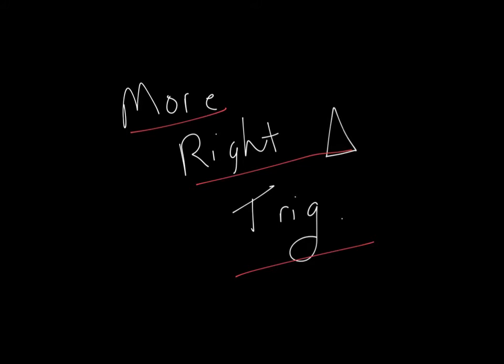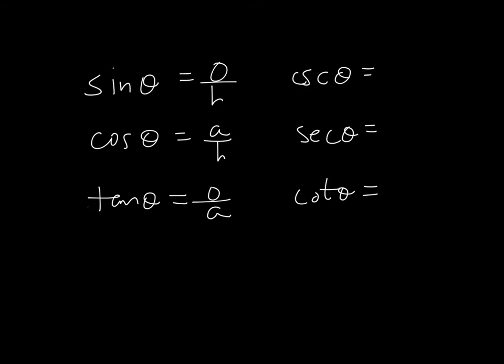We're going to learn some new material. We talked about sine, cosine, and tangent, and now we're going to look at a little review of the three we talked about yesterday. Here's sine: opposite over hypotenuse, cosine: adjacent over hypotenuse, tangent: opposite over adjacent.